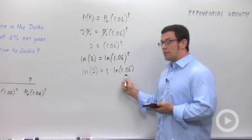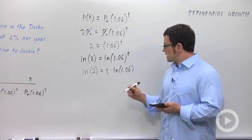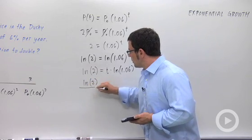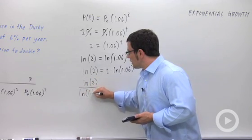To solve this, all we need to do is divide both sides by the natural log of 1.06. So ln 2 over ln of 1.06.